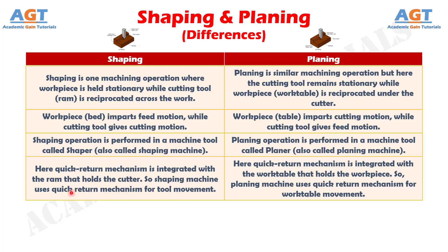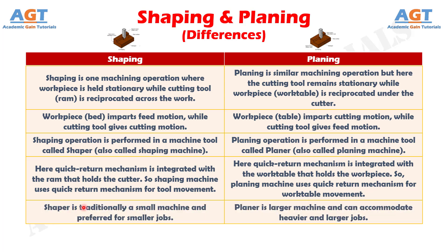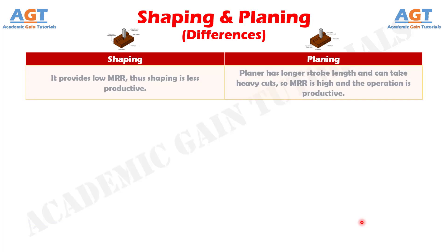So the shaping machine uses quick return mechanism for tool movement, whereas in planing operation, quick return mechanism is integrated with the work table that holds the workpiece. So the planing machine uses quick return mechanism for work table movement. Number 5: Shaper is traditionally a small machine and preferred for smaller jobs, whereas planer is a larger machine and can accommodate heavier and larger jobs.